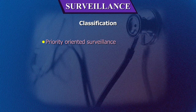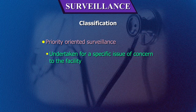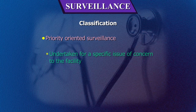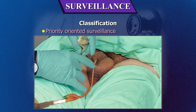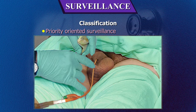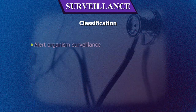Priority-oriented surveillance is the surveillance undertaken for a specific issue of concern to the facility. For example, UTI in patients with urinary catheters in long-term care facilities.